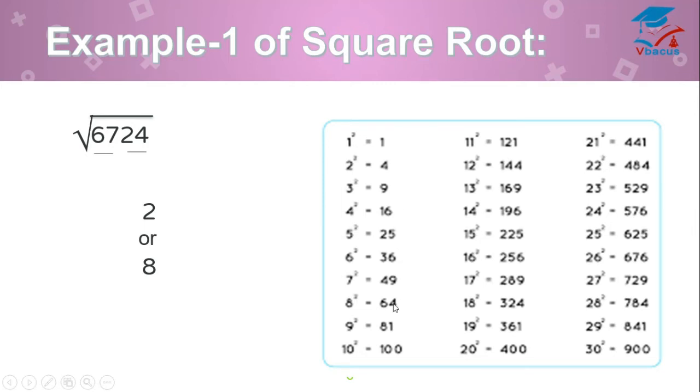Now, forget about last 2 digits. See 67, where does it fall? 67 falls in between 64 and 81. Take the smaller one. Square root of 64 is 8. Write 8.